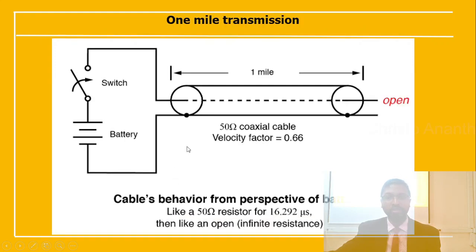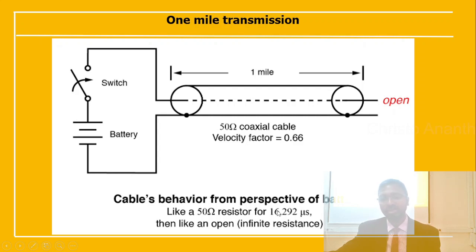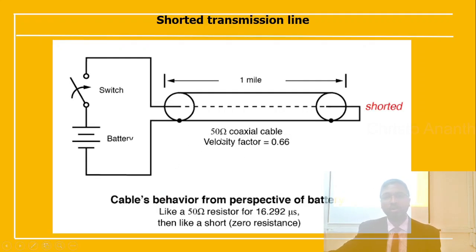For a one-mile 50-ohm coaxial cable with velocity factor 0.66 that is open-circuited, the cable's behavior from the battery's perspective is like a 50-ohm resistor for 16 microseconds, then it appears as an open circuit or infinite resistance. For the same cable that is short-circuited, it behaves like a 50-ohm resistor for 16.292 microseconds, then appears as a short circuit — zero resistance.